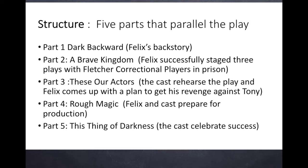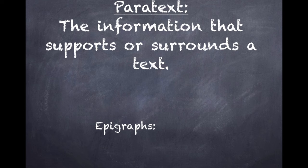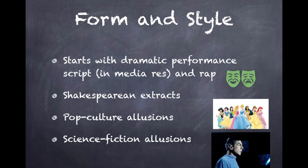Another example of Atwood's playful use of form can be seen in her use of paratexts. The paratexts play a large role in influencing meaning and our interpretation of the work. Some examples include the subtitles, the epigraphs, the prologue and the epilogue. These fictional techniques suggest the intertextual possibilities in the novel and further shape our interpretation.